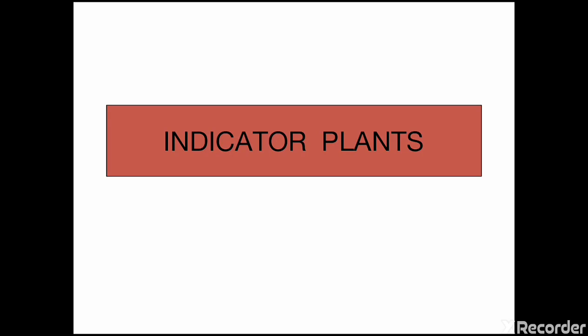Hi friends, today in this section we are going to discuss about indicator plants. Certain plants by nature are very sensitive to deficiency of specific nutrients and they produce specific symptoms. The symptoms of deficiency which they produce is different from other deficiency symptoms. Thus, deficiency of that element can be easily detected. Let's discuss some of the deficiency symptoms producing plants for important nutrients.